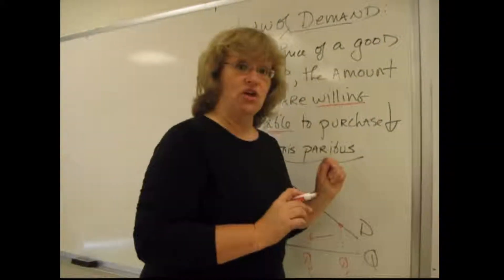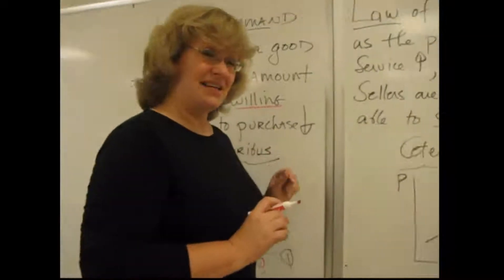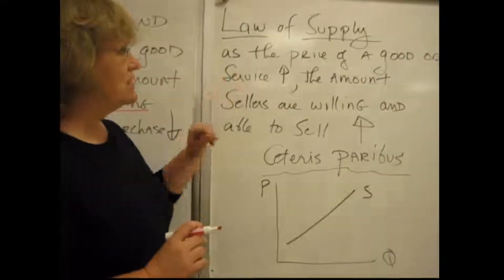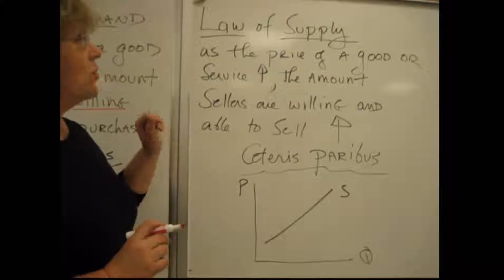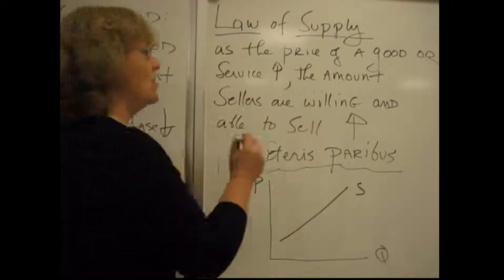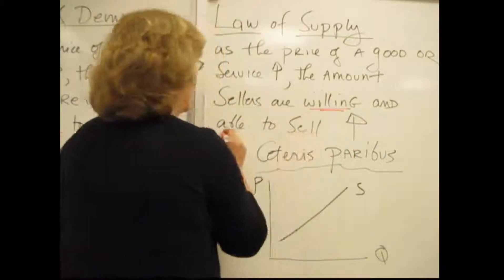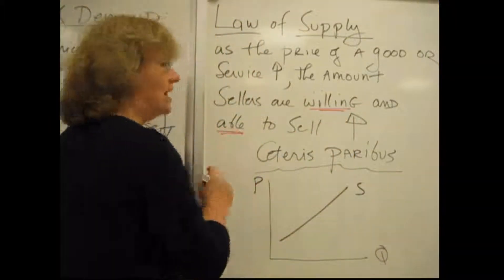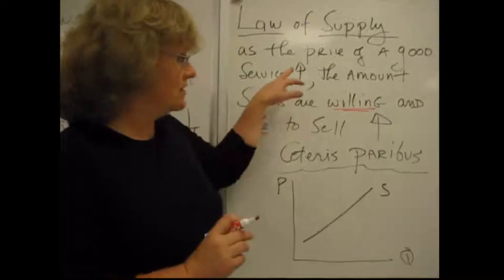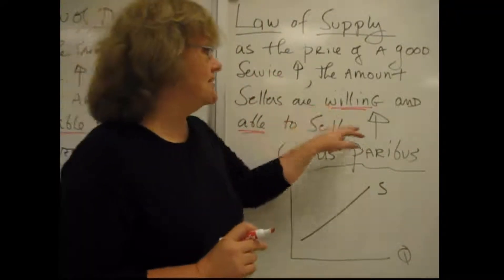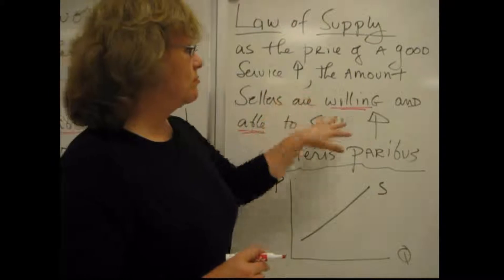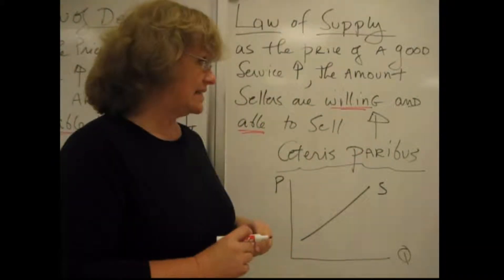Now let's move over here and look at the Law of Supply — it's going to sound kind of familiar. The Law of Supply says as the price of a product, a good or service, increases, the amount that sellers are willing and able to sell goes up. This time the arrows don't go in the opposite direction — they go in the same direction. This is a direct relationship between price and the amount that someone wants to sell.